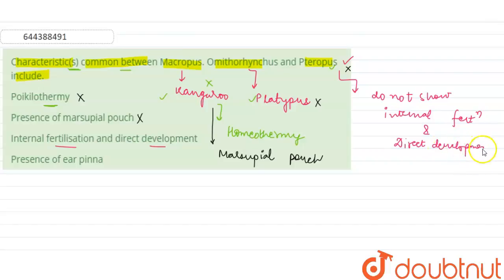That's why this will also not be the answer. So the last answer, that is presence of ear pinna, is common in all three of them, and that's why this will be the correct option.